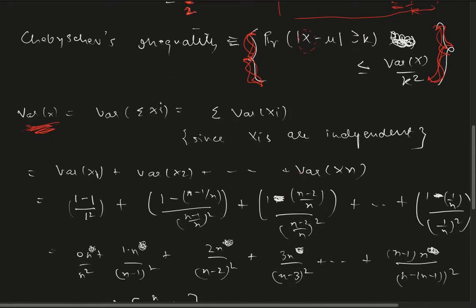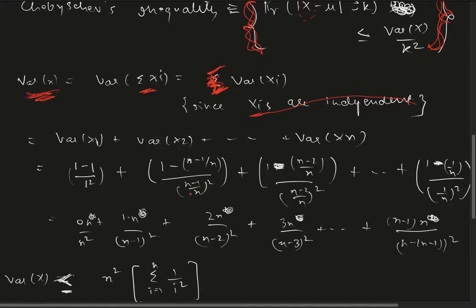We calculate variance of X, which will be the variance of summation of X_i. Since X_i's are independent, we can take the summation sign outside. Variance of a geometric random variable is to recap: